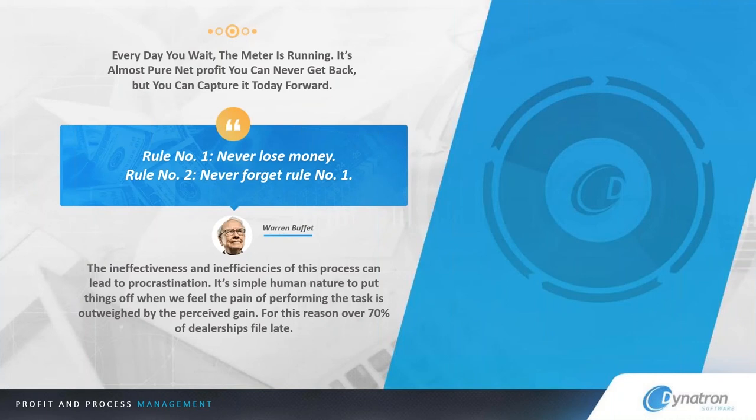I love to quote Warren Buffett because he's one of our biggest customers with Berkshire Hathaway. He basically has two rules of business: rule number one is never lose money, and rule number two is never forget rule number one. Because this process is generally inefficient today, our core philosophy is that this should have always been an administrative function. We can file traditionally 60 to 90 days earlier than your average service director, pulling down that opportunity faster and maximizing it more efficiently. Every day that you wait, the meter is running — it's almost pure net profit you can never get back, but you can capture it today moving forward with a partnership.